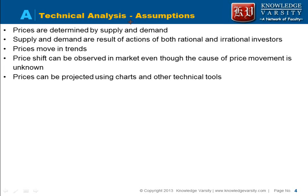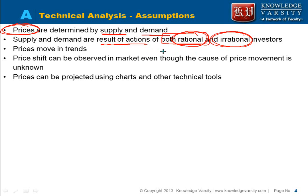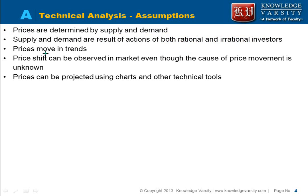The technical analysis assumptions are: first, the prices of any security are determined by the supply and demand of that security. This supply and demand are the result of actions by both rational and irrational investors. Not all investors are rational in the market; there are irrational investors too, and because of their irrationality prices can increase or decrease a lot. Second, prices of securities move in trends — if increasing, they follow an upward trend over a long period of time, and if decreasing, they follow a downward trend.